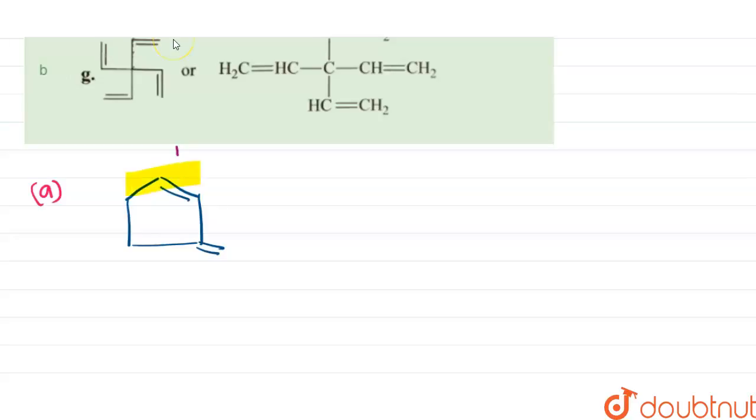So this cyclic compound will be acting as the parent chain, on the basis of which the word root is decided, and this will be acting as the substituent.